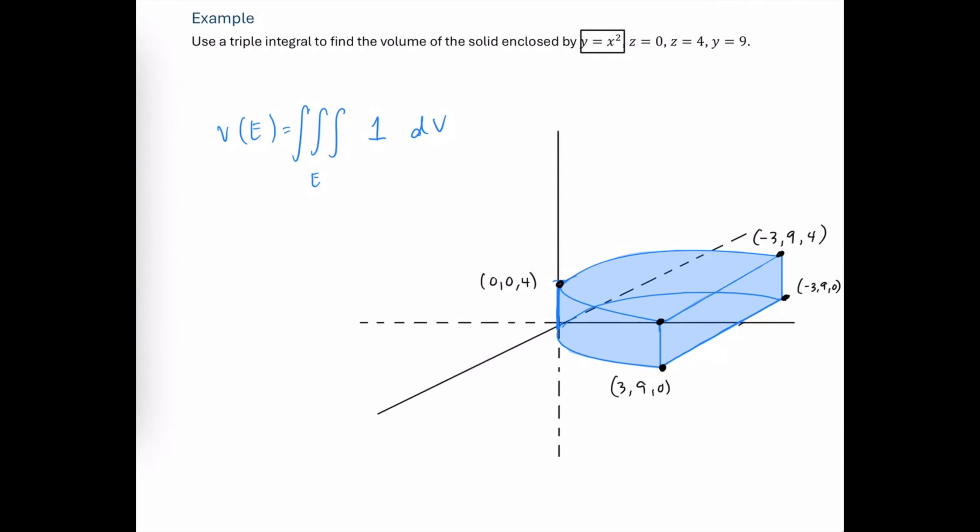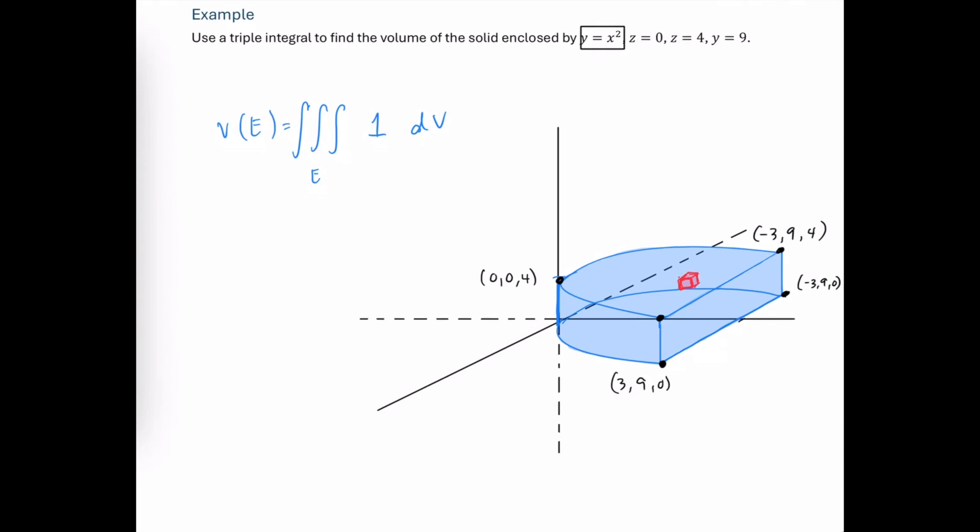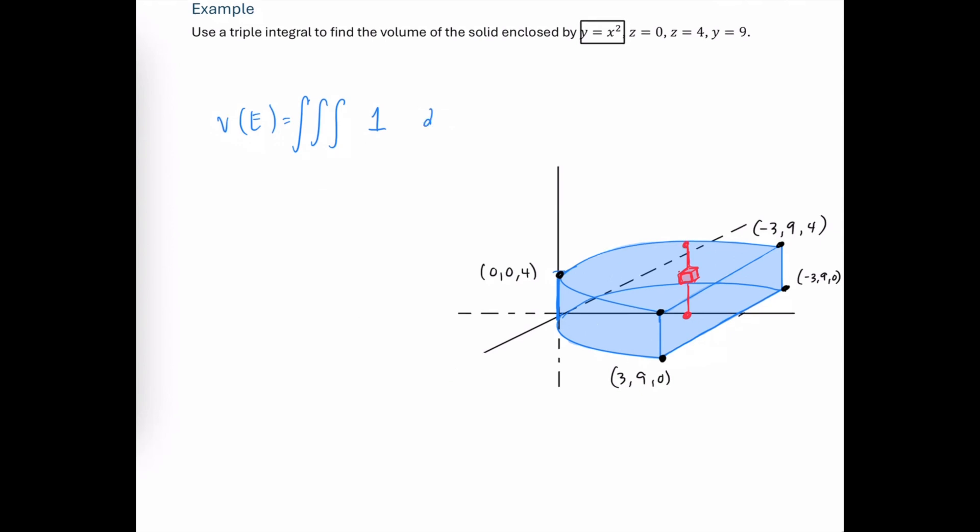So now it's time to think about our order of integration and our limits of integration. We do actually have several options here because of the shape of this domain region, but let's think of our rectangular solid and initially z seems like a pretty easy direction. So we've got the lower limit of z equals zero and an upper limit of z equals four.